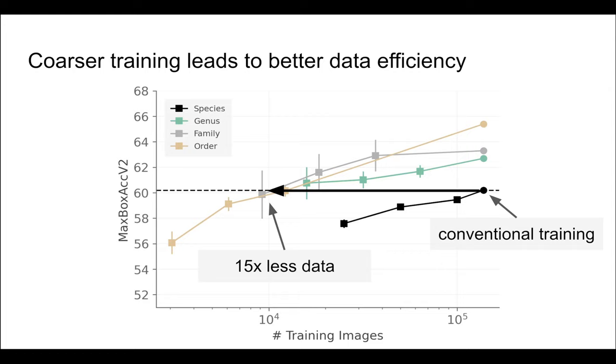For instance, training at the family granularity level achieves the same performance as conventional training, with 15 times fewer labels.